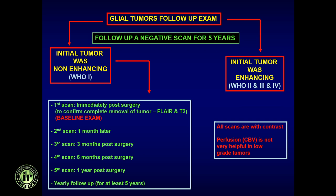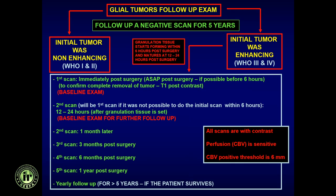For non-enhancing WHO 1 tumors: baseline post-surgery exam to confirm complete removal, then follow-up at 1, 3, 6, and 12 months, then yearly for 5 years — if negative for 5 years, consider treated. Most institutions add CBV perfusion to all studies, though ideally perfusion imaging does not really help for Grade 1 unless the tumor undergoes aggressive degeneration — then you see a low-grade neoplasm with new enhancement indicating degeneration to Grade 2, 3, or 4.